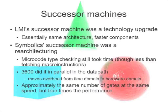Both companies started their successor machines. LMI's successor was more or less the same architecture with faster technology, giving a performance boost. Symbolics' successor machine was an attempt at an architectural improvement. The main improvement was to take the tags and put them in every word in memory. Some of the CADR floating point manipulations used 32-bit floating point with no tags, and keeping track of those in registers and in the garbage collector was a pain and sometimes got it wrong.